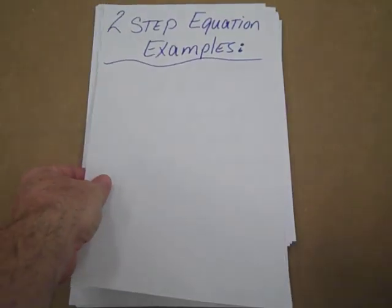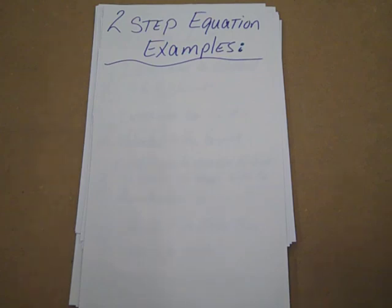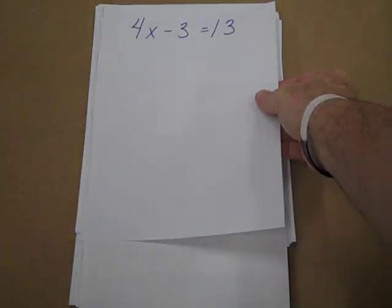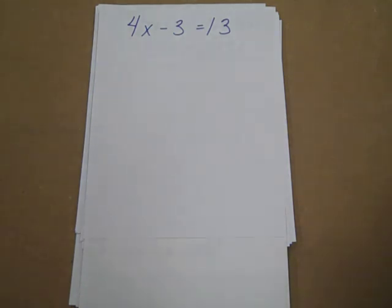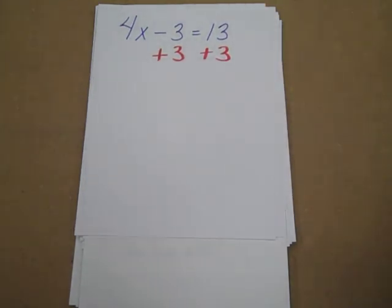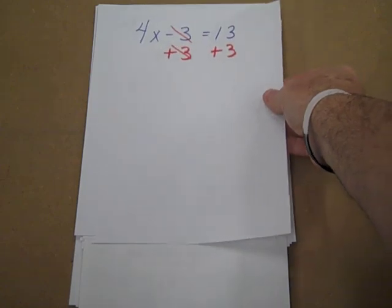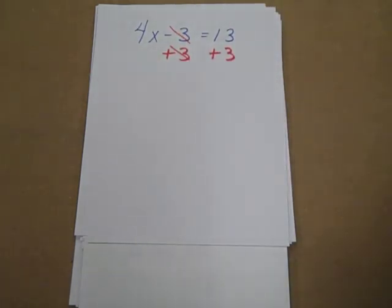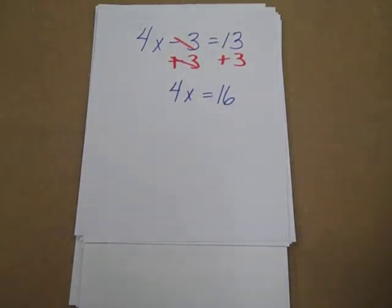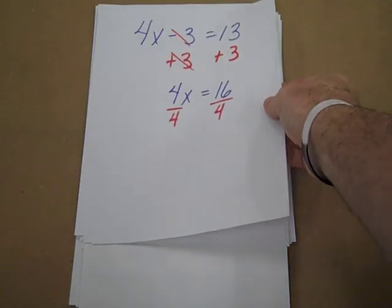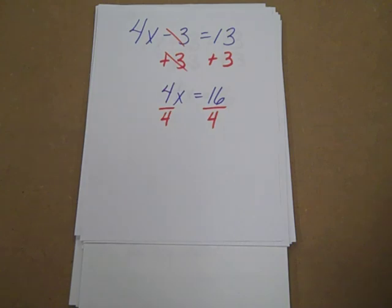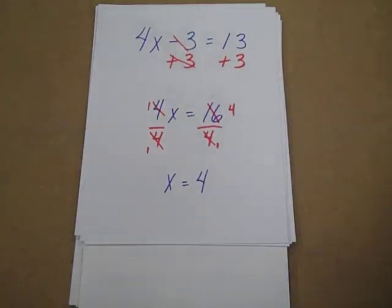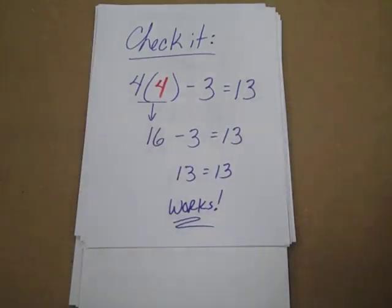Looking at two-step equations — these are some that we'll be working with as well. Now we're just doing two steps to the process. Here's our equation. We're going to add 3 to both sides because that's how it's attached. Get rid of the 3 on the left-hand side, bring down whatever's left, and combine our right-hand side. Now we get rid of the 4 that's attached to the x on both sides, so we divide. Reduce on the right-hand side — that gives us our answer of 4. If we check it, put our number in, again use parentheses for letters — it works out.